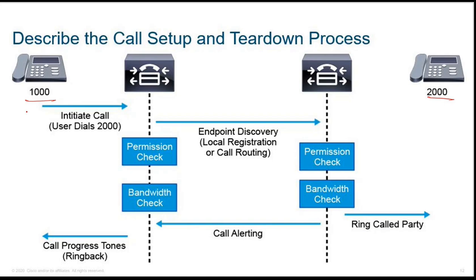When 1000 initiates a call and dials 2000, the call will be initiated and it will go to the CUCM. It will do a permission check and send an endpoint discovery message for local registration or for call routing. If the device resides within the enterprise or is registered on the same CUCM, it's local registration; if not, it will go to the gateway, and that's where call routing will be used.